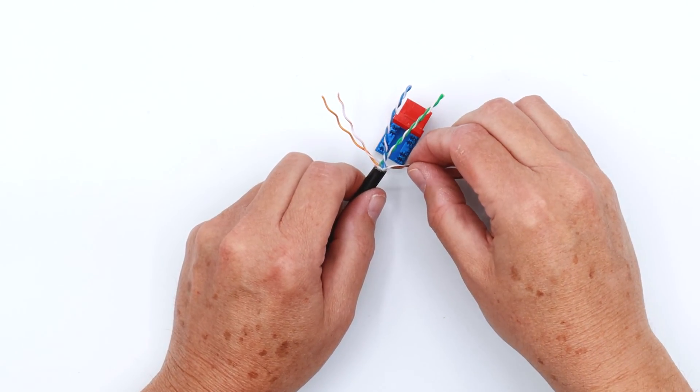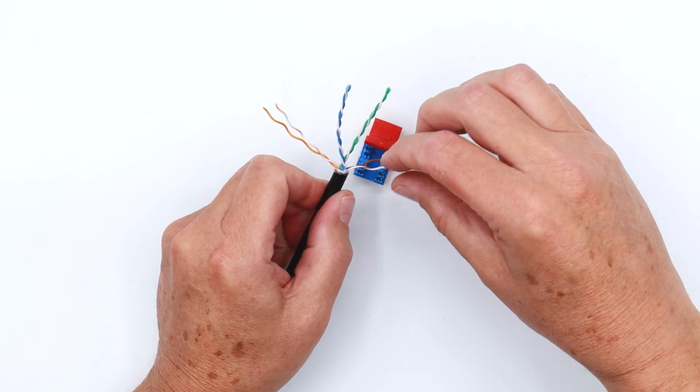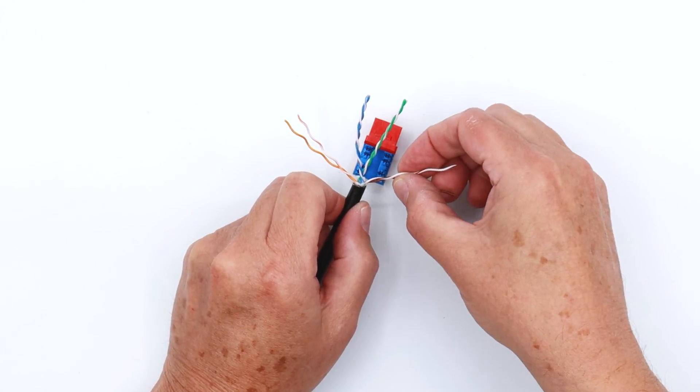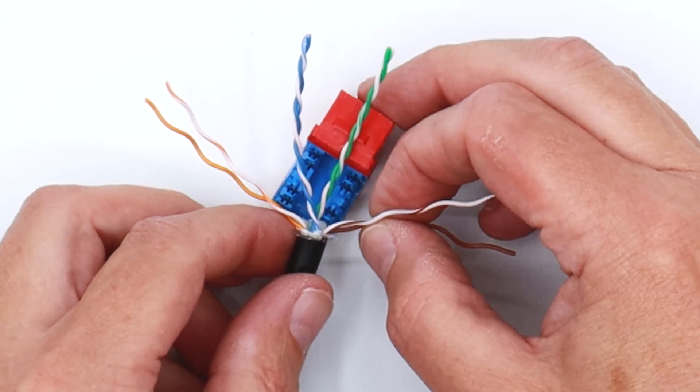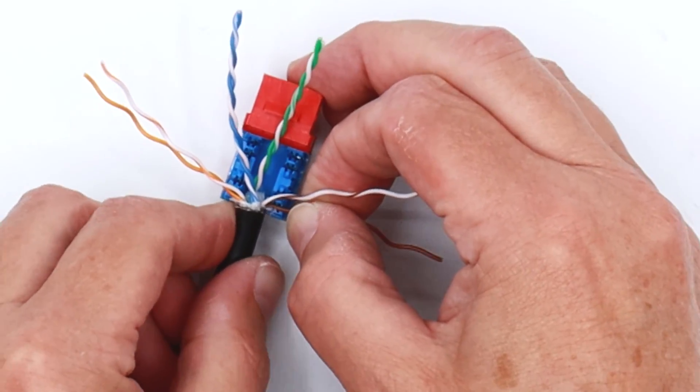So in the case of our keystone, it's solid then striped, so we'll just add a little twist back in, seat the solid conductor. We want to put the cable jacket all the way to the rear of the keystone, like so.